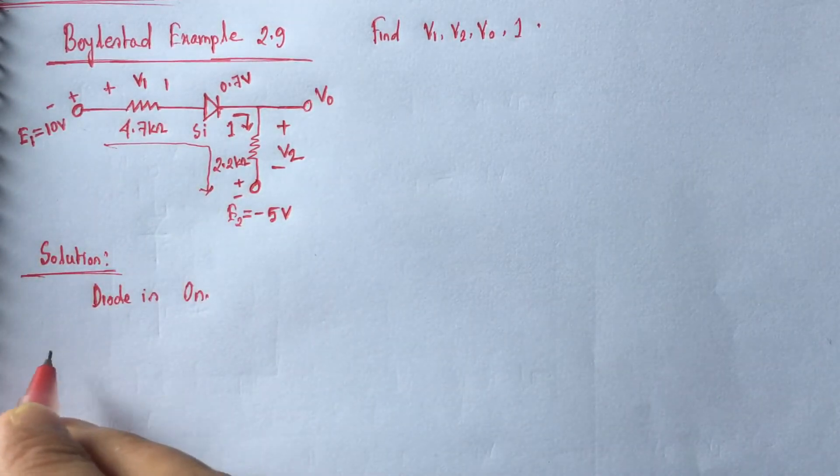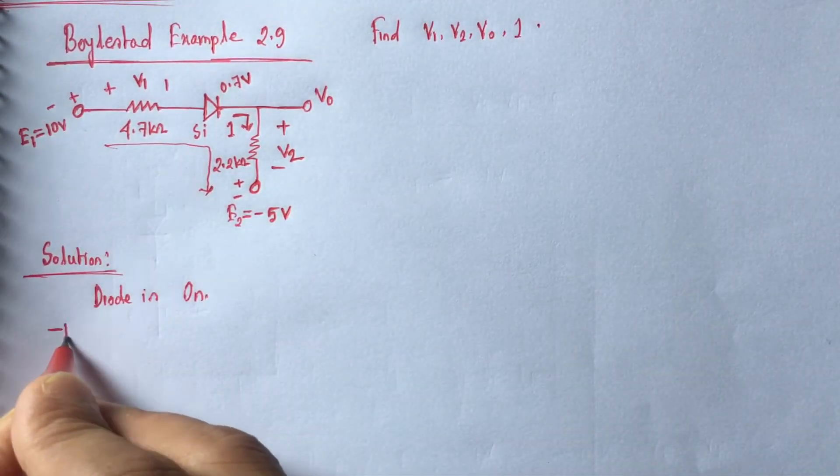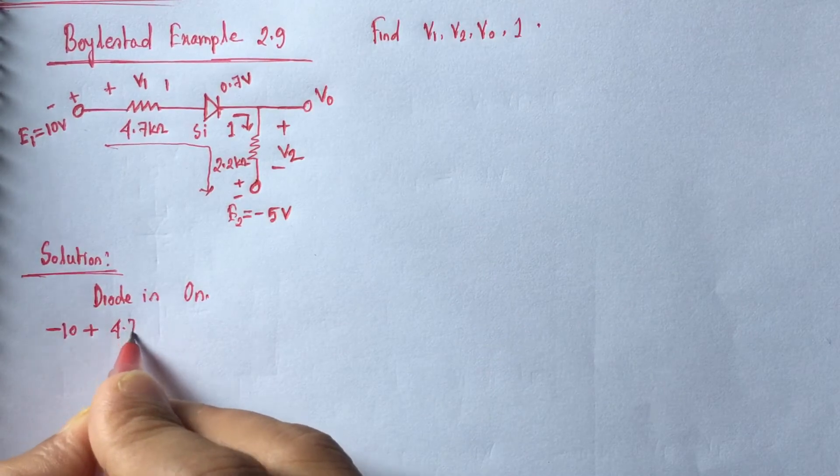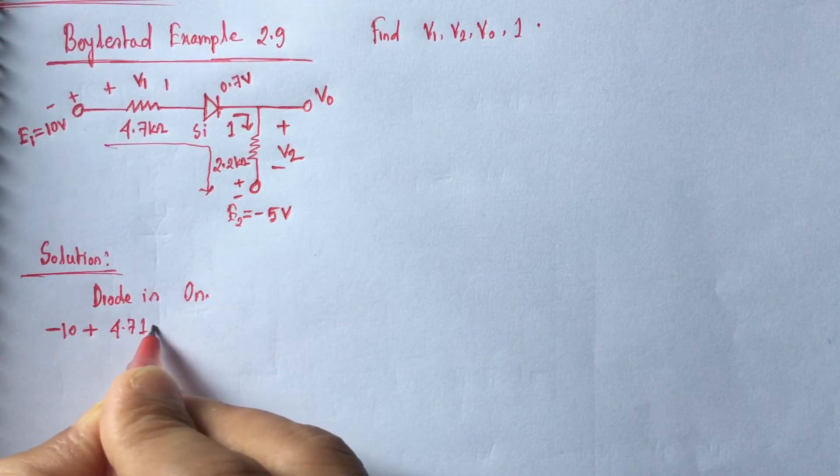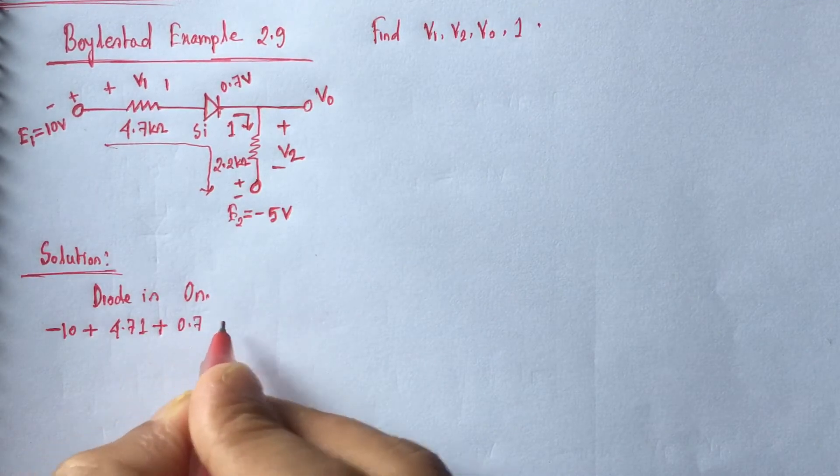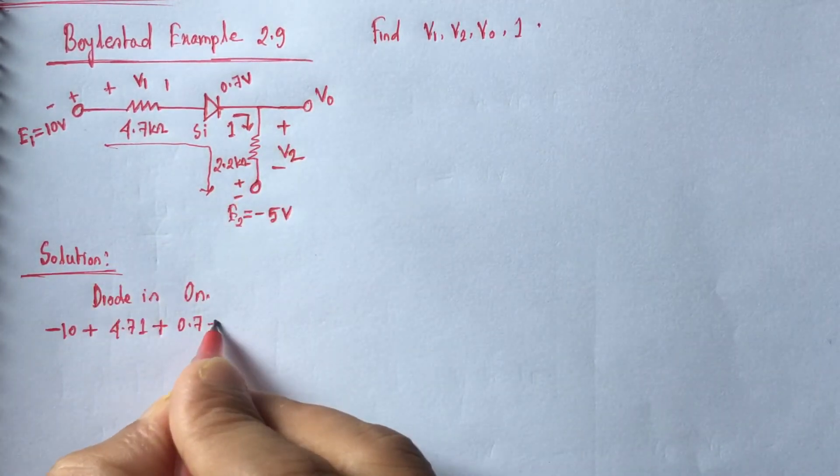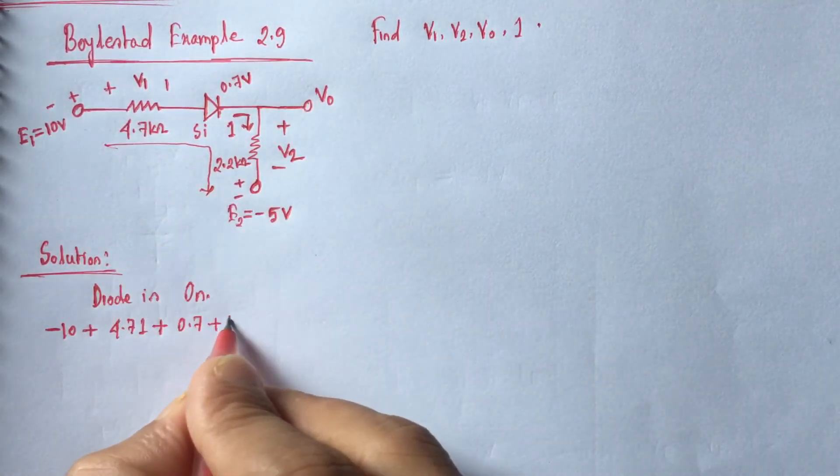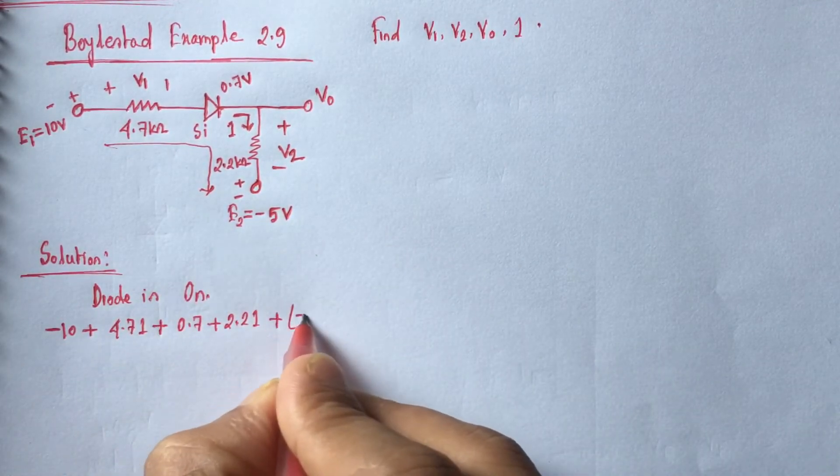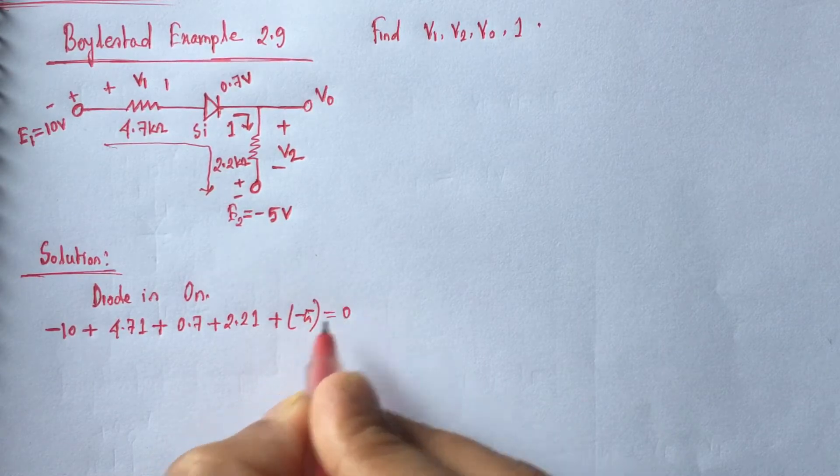we will have the following equation: minus 10 plus 4.7 I plus 0.7 plus 2.2 I and here plus into minus 5 is equal 0.